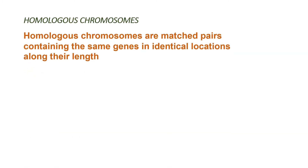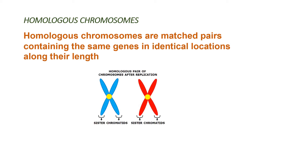Homologous chromosomes, by definition, are matched pairs containing the same genes in identical locations along their length. In simple terms, homologous chromosomes are identical in the number of genes, the location of genes, the position of genes, and the centromeric position. In addition, these homologous chromosomes come one from each parent — each parent contributes one chromosome to the homologous chromosome pair.